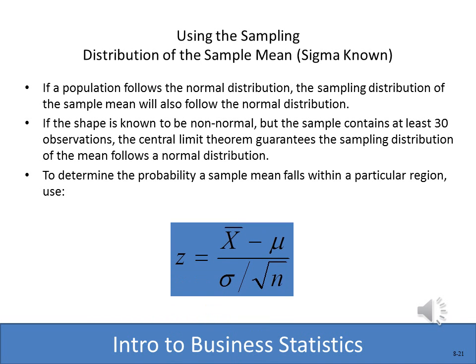In the next slides we'll show an example of using sample means. To do this we need to know sigma, the standard deviation of the population. We'll compute a Z based on the sampling mean using the formula: Z = (X-bar − μ) ÷ (σ ÷ √n). This allows us to use our sample to predict how close it is to the actual population mean.